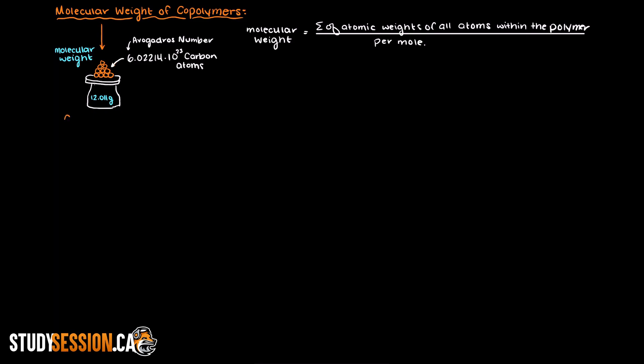Let's remember back to an earlier video where copolymers were introduced. A copolymer is a polymer that is constructed of more than one monomer, meaning that our polymer's structure is made up of two or more different monomers. I will leave a link in the description below for further clarification on what exactly a copolymer is and the different types of copolymers.